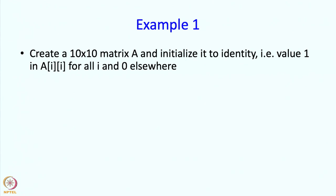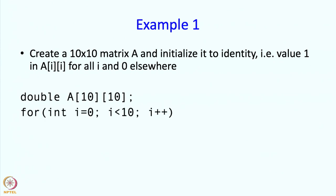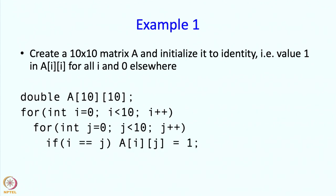Here is an example: create a 10 by 10 matrix and initialize it to the identity matrix — value 1 in those elements whose indices are the same (the diagonal elements) and 0 elsewhere. The matrix is declared with 10 rows and 10 columns. Then, for i going from 0 to 10 (row index) and j (column index), if i and j are the same, set a[i][j] to 1; if different, set a[i][j] to 0.